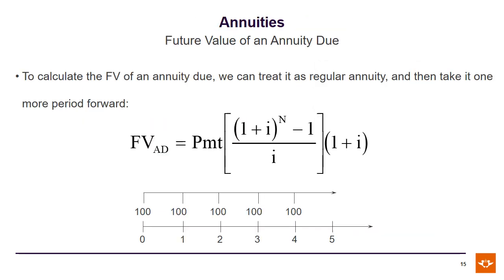In order to calculate the future value of an annuity due, we can treat it as a regular annuity, but then we need to take it one more period forward. Looking at the example we've been using — the 5-year annuity paying R100 each year — the R100 payment takes place at the beginning of each period. In the case of a regular annuity, if we calculated this future value, it would take us only until the end of year 4, but this is a 5-year annuity, so we need that extra year. To get us over into that last year, we add one year's interest more than we already have. Applying this formula, we end up with a future value of R671.56.